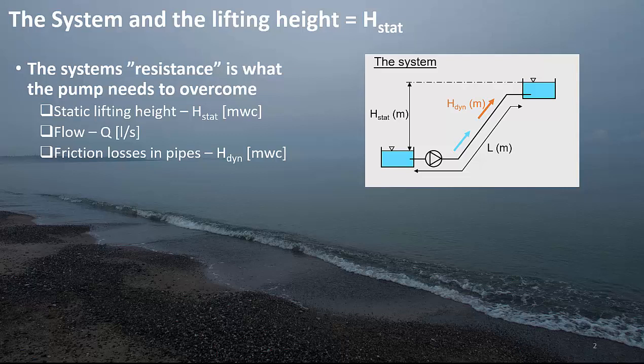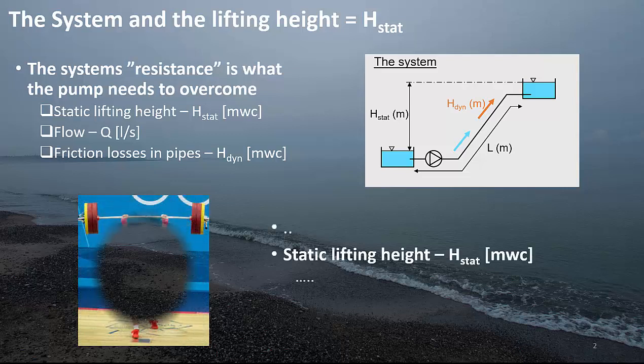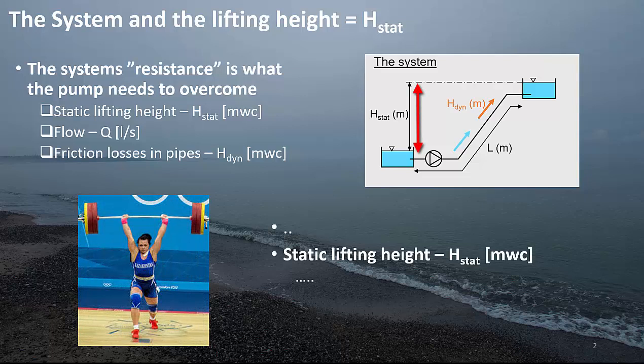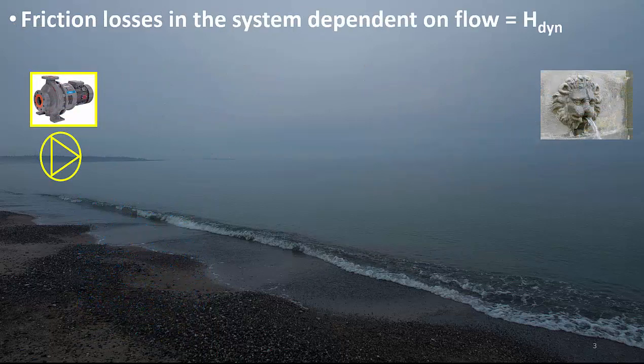Now let's look at the static lifting height. The static lifting height is basically the level from where you're pumping and the distance up to where you want to pump the water. Friction losses in the system are dependent on the flow, or the dynamic head.